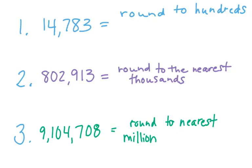Go ahead and wipe off your whiteboard. This will be our last warmup. Number one, we're going to round 14,783 to the nearest hundreds. Number two, round 802,913 to the nearest thousands. And number three, 9,104,708 to the nearest million. Go ahead and round those three numbers. Remember to pause the video before you continue.